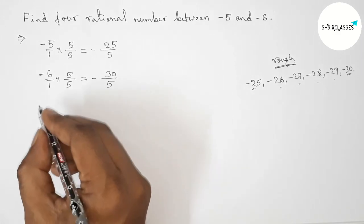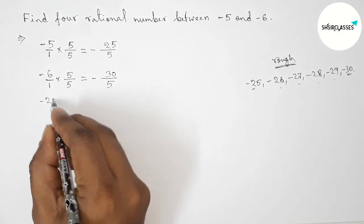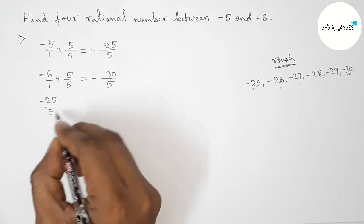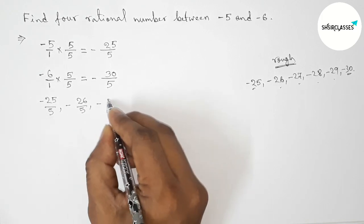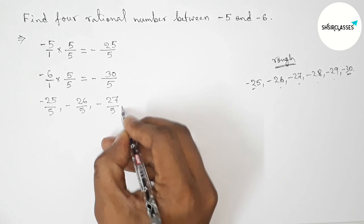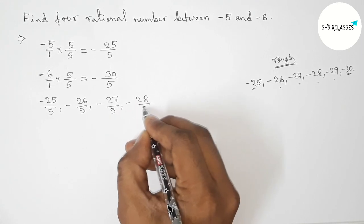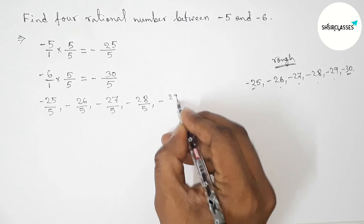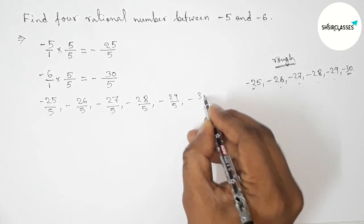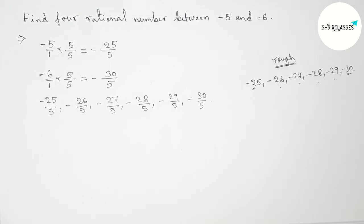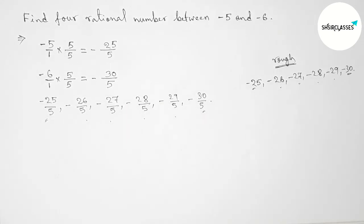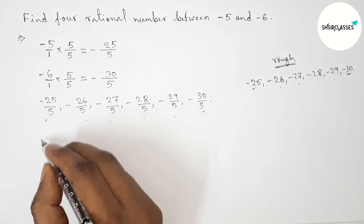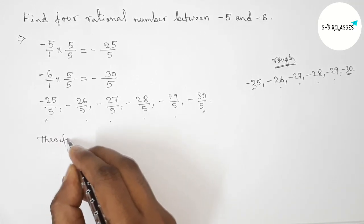Now write down here all the rational numbers first. So minus 25 by 5, then minus 26 by 5, then minus 27 by 5, then minus 28 by 5, then minus 29 by 5, and last one minus 30 by 5. Okay, so here between this and this, these are required four rational numbers.